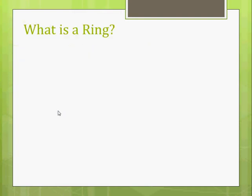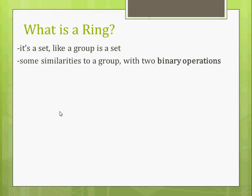What is a ring? What are some characteristics of a ring? Well, it's a set, first of all — just like a group is a set with certain conditions. And it's similar to a group, but with a ring we have two binary operations.